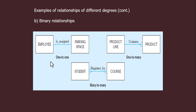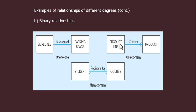These are examples of binary relationships. An employee is assigned a parking space, or a parking space is assigned to the employee — so there is a relationship between two different entities. Here there are two entities: product line and product, so again the relationship is binary because it exists between two different entities. Similarly, student and course entities are related using a binary relationship.